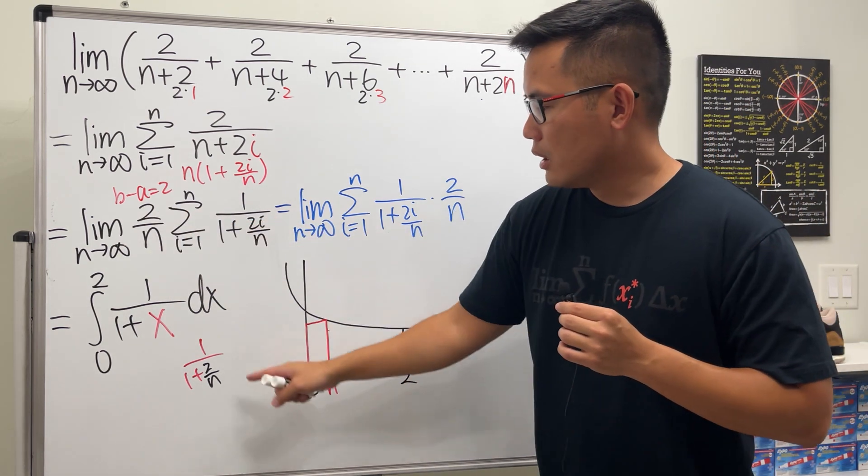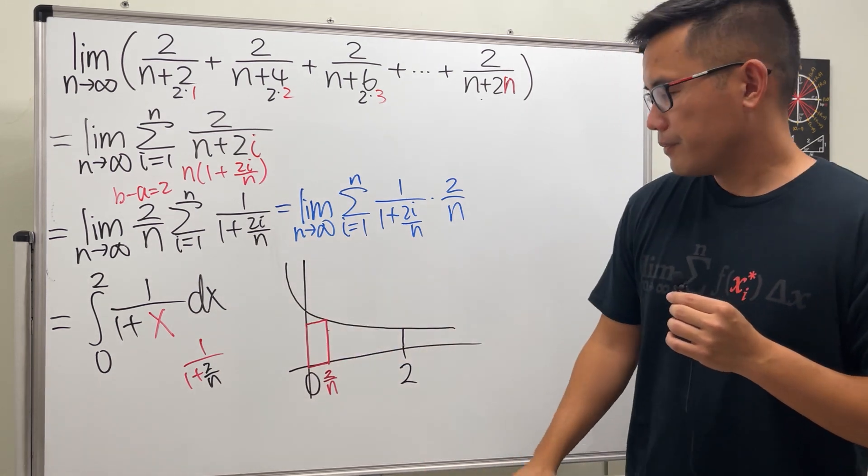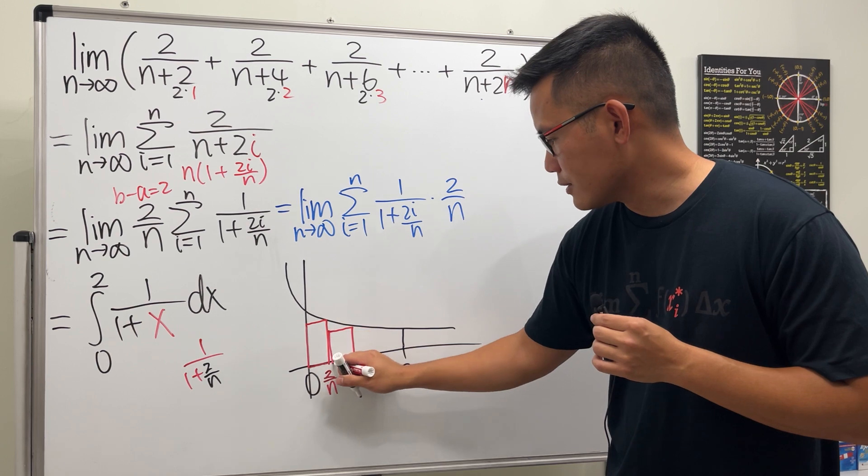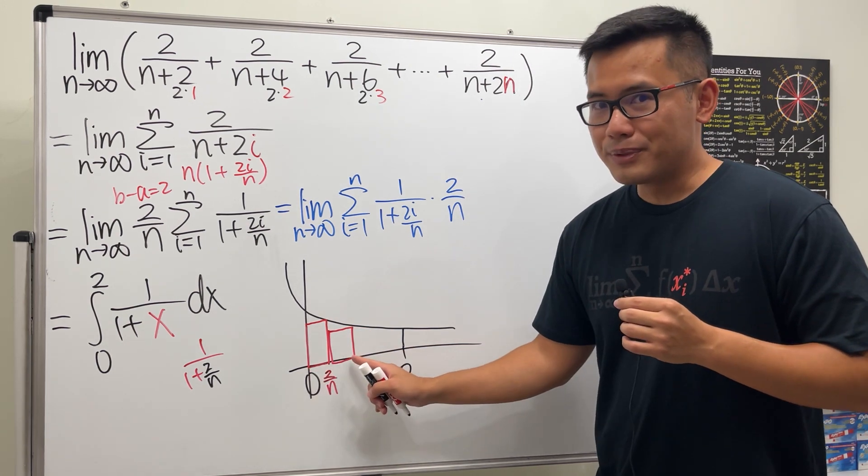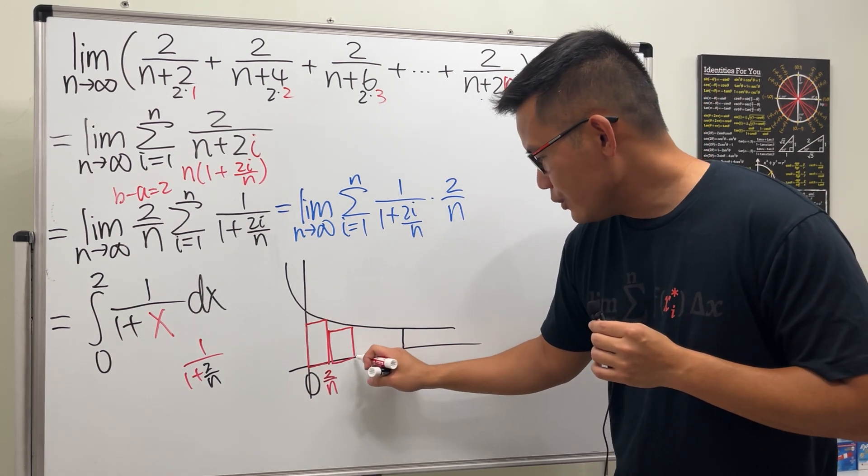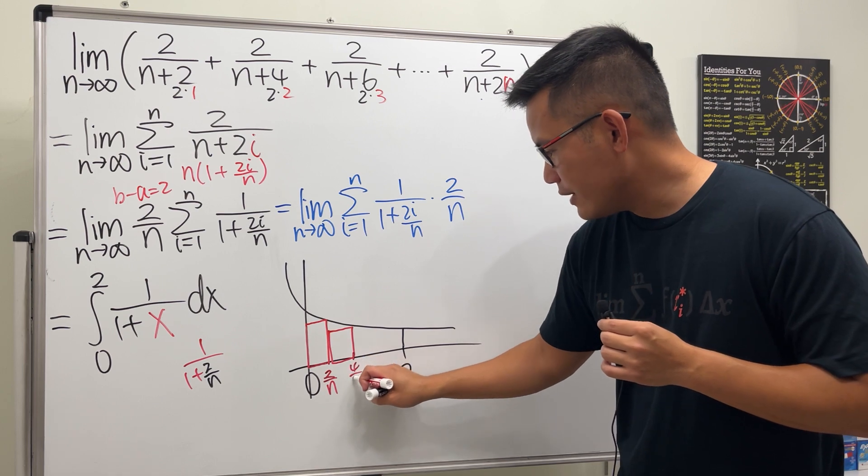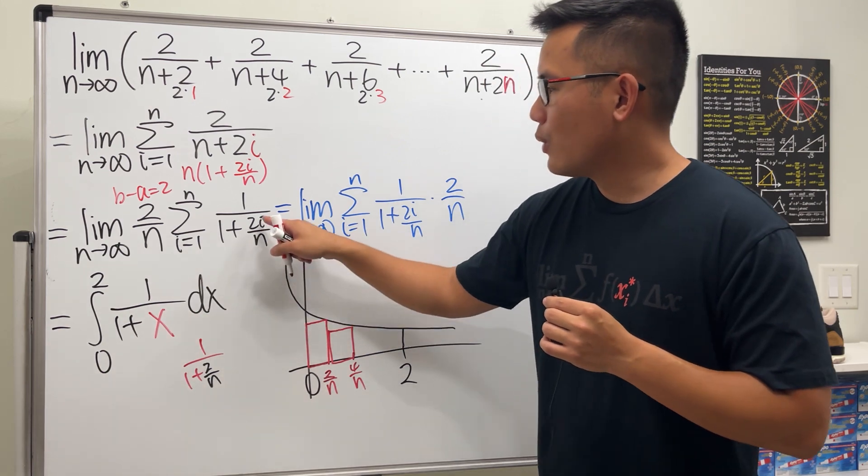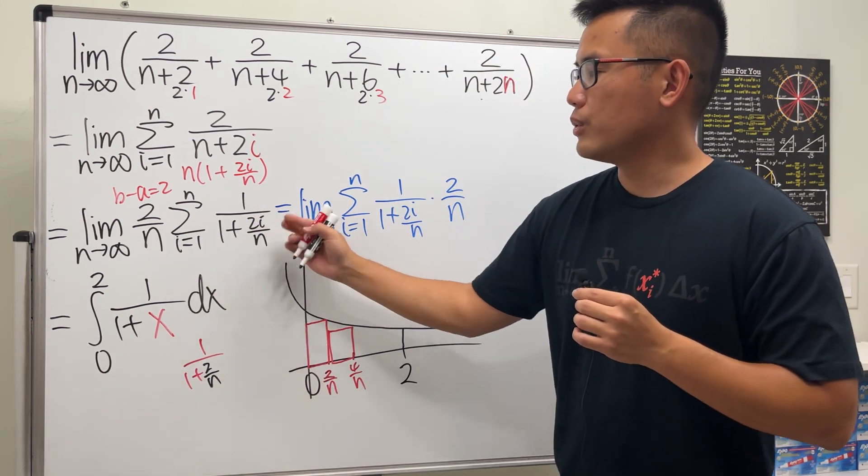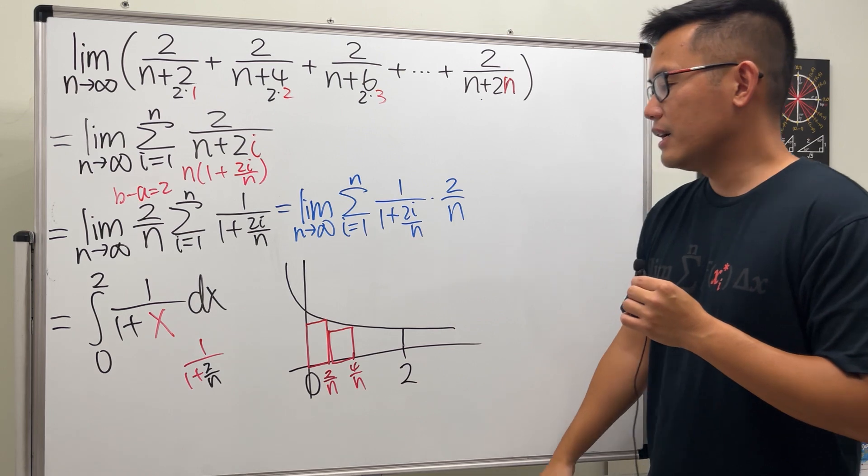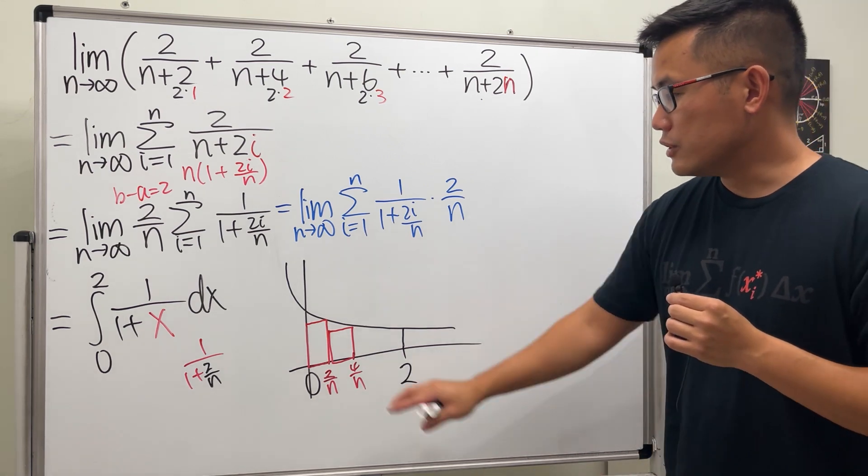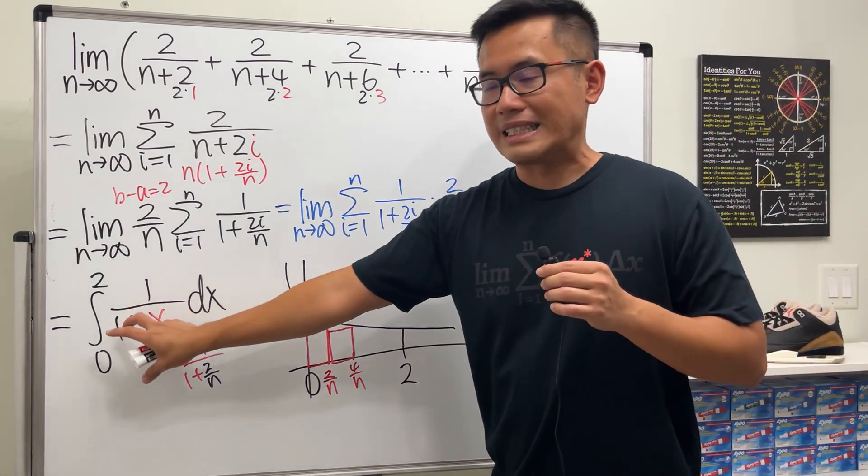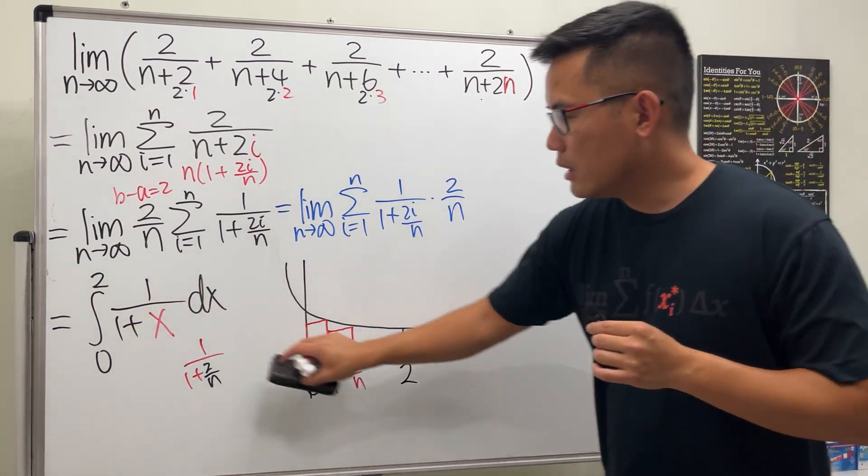You see, when we have the 2 right here, the whole thing is the x. Let's try another one. The next rectangle will look something like this. But you go up 2 over n again, so the x value here is 4 over n. And when we put 4 over n here, that's precisely what? This expression when i is equal to 2. We have the 4 over n. So that's the idea. Then so on, so on, so on. So you can see that this right here is in fact equal to that.